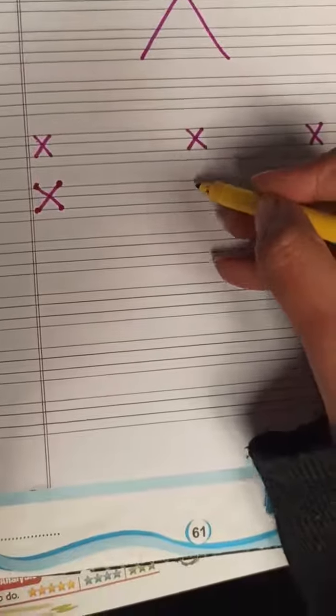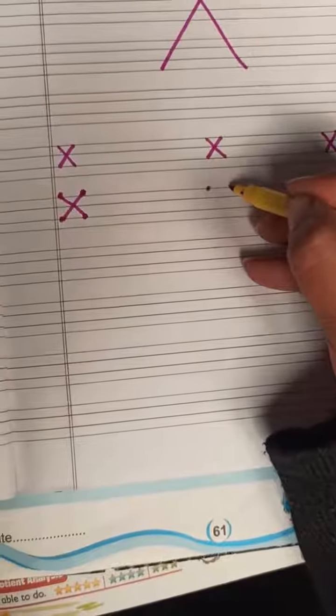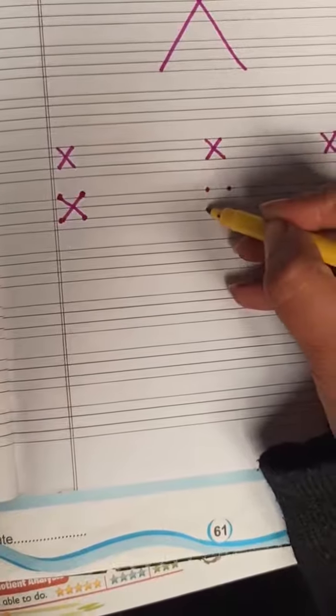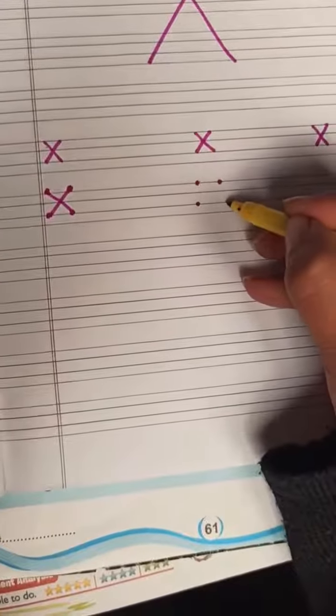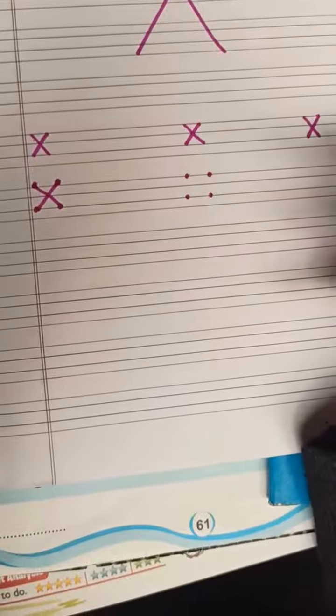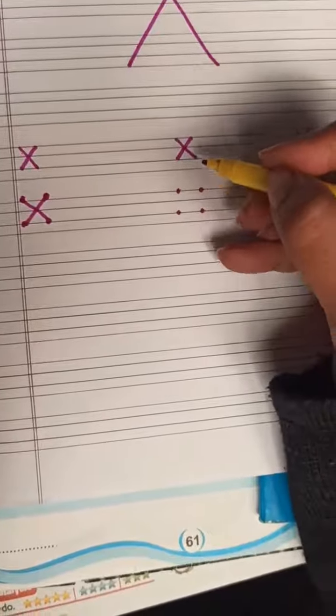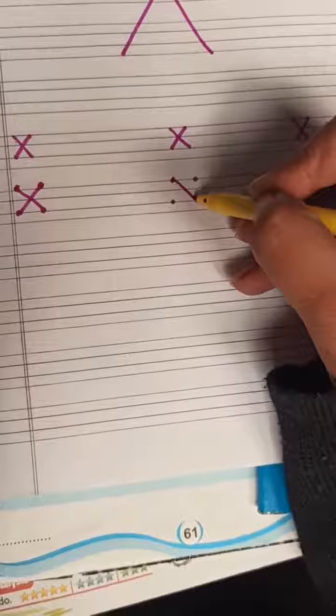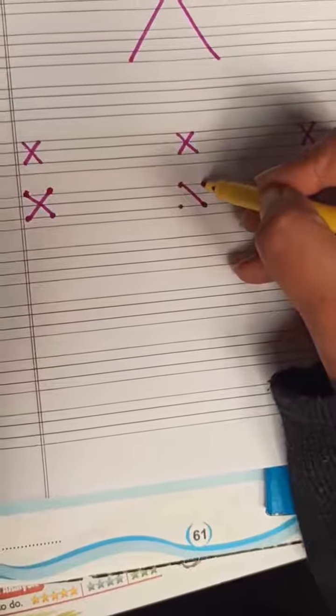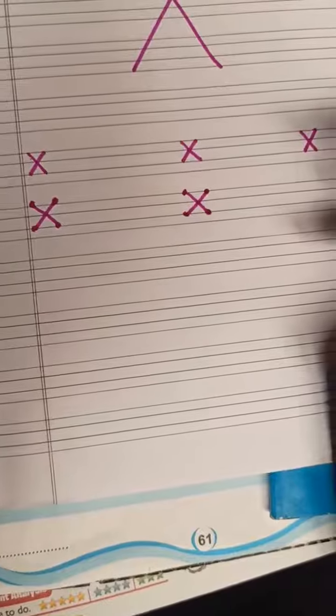Once again, we will see. Dot. 2 dot. 3 dot. And 4 dot. See how many dots are here? 4 dot. And we will now make slanting line, slanting line. So, our X for Christmas tree is ready.